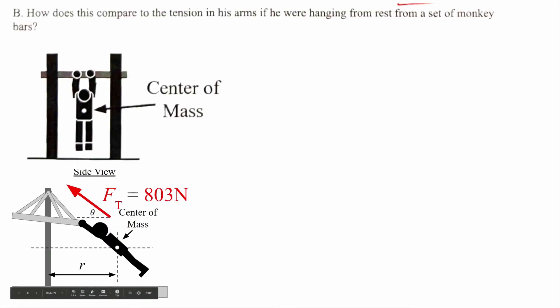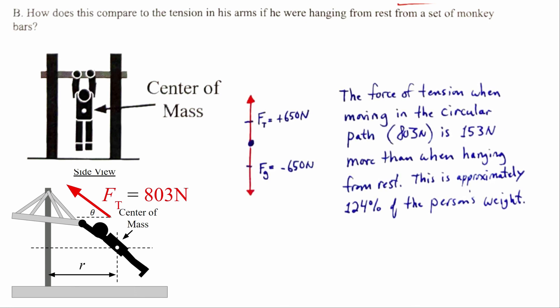For the last part: how does this compare to just hanging at rest from monkey bars? The force of gravity on me — whether hanging at rest or not — is negative 650 newtons, so the combined tension in my arms would be positive 650 newtons, just equal to my body weight. When swinging around, the tension is 803 newtons, which is about 153 newtons more than at rest — approximately 125% of my weight.